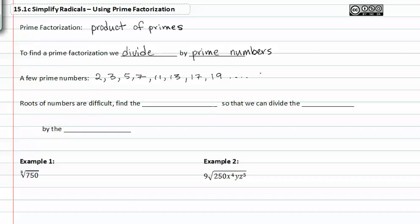Roots of numbers are difficult. So we find the prime factorization so that we can divide the exponent by the index. If we don't have those numbers it's hard for us to determine what the exponent would be. So we find the prime factorization so that we can divide the exponent by the index, just as we were doing with the variables.